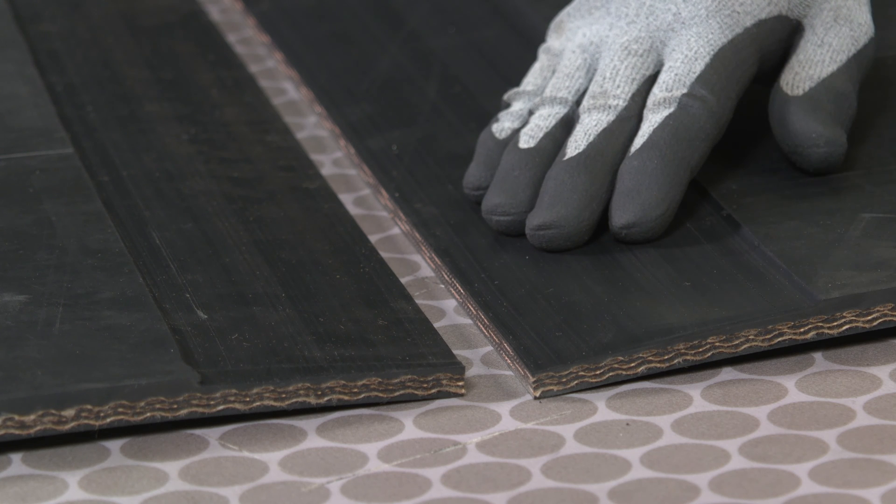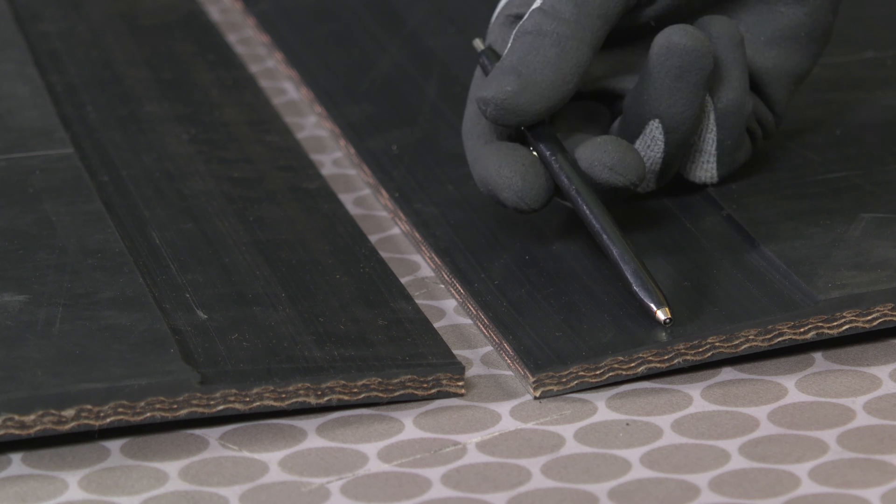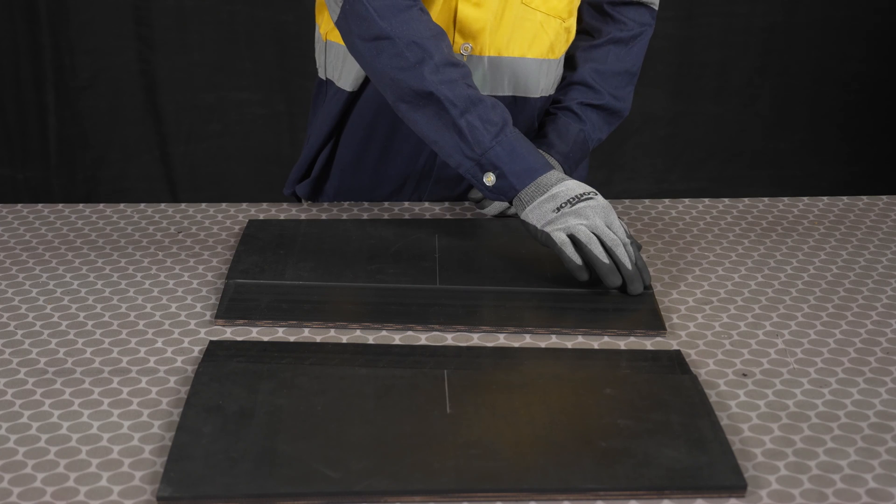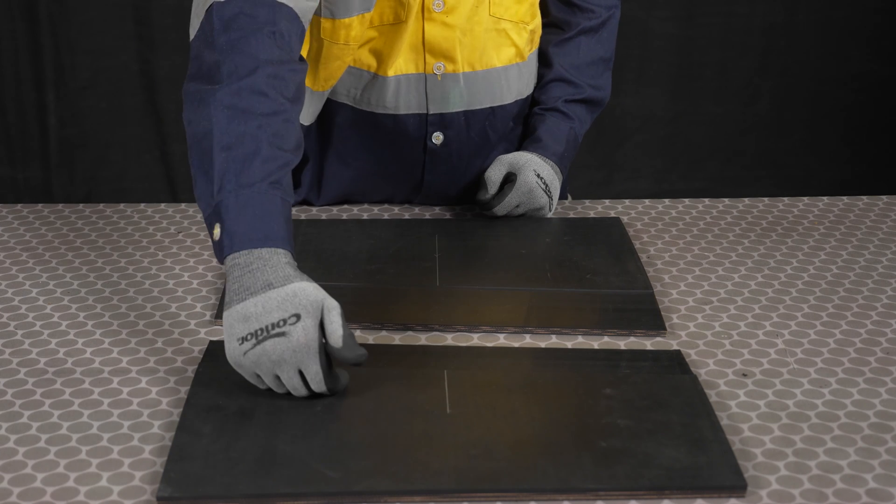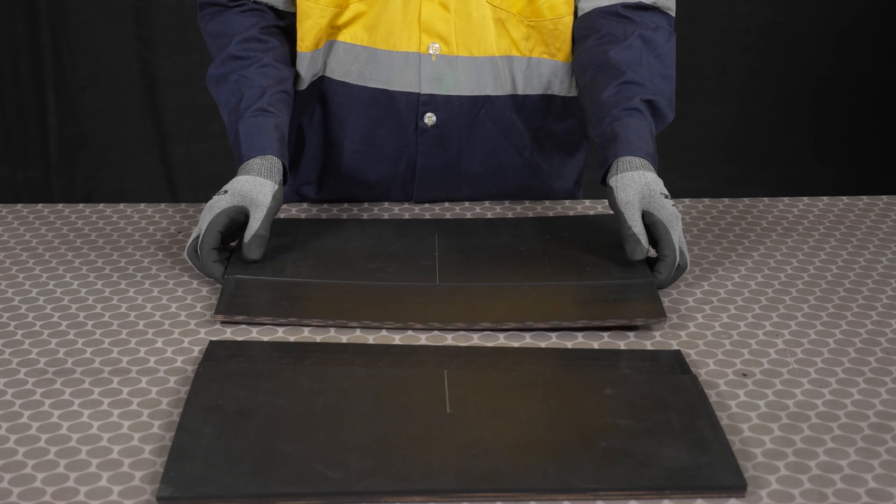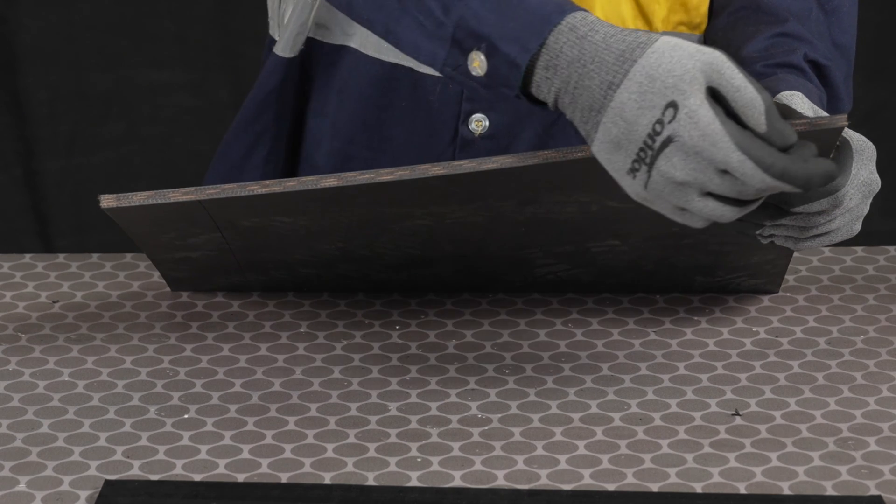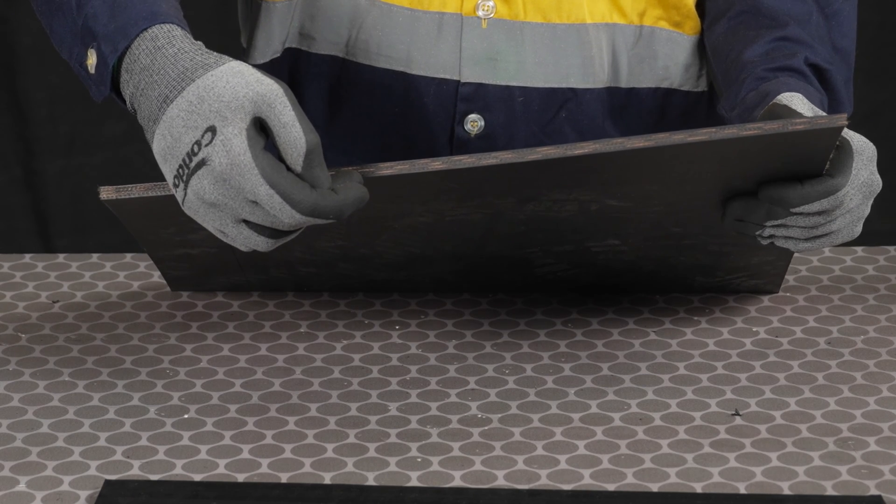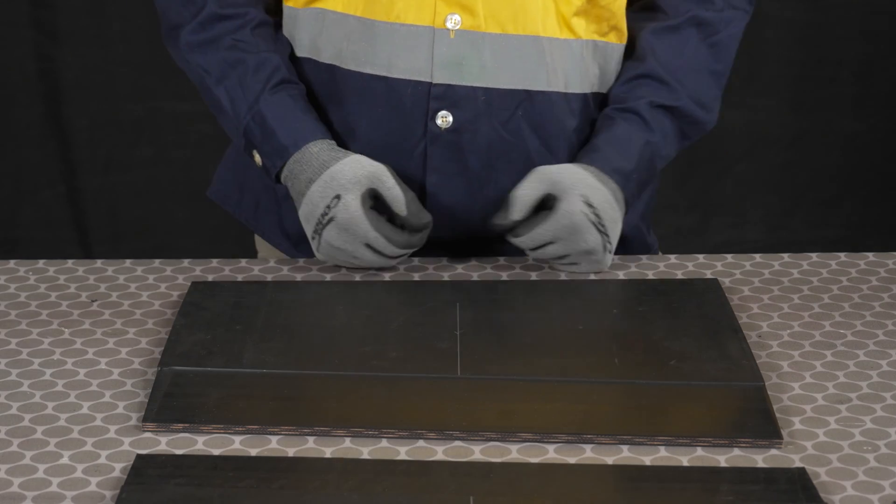Skive off as much top cover rubber as possible without cutting into the plies of the belt. It is recommended to skive the bottom cover if it is greater than one eighth of an inch. Once the skiving is complete, chamfer the top cover on the trailing side of the belt, then chamfer or bevel the top and bottom edges of both ends of the belt.